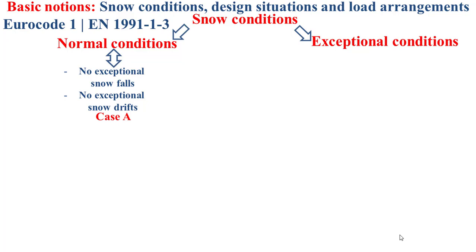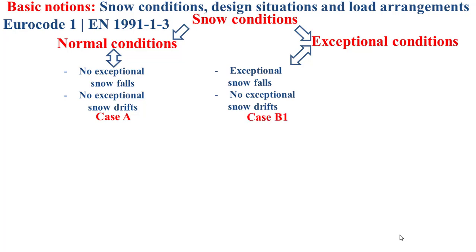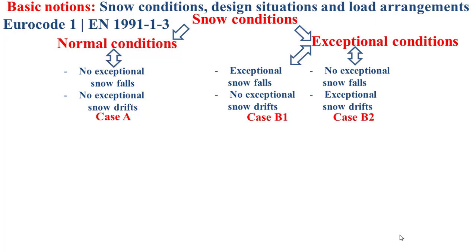This is Case A. For the exceptional conditions, we have three cases. The first one is characterized by exceptional snowfalls but no exceptional snowdrifts — this is Case B1. The second case is characterized by no exceptional snowfalls and exceptional snowdrifts — this is Case B2.